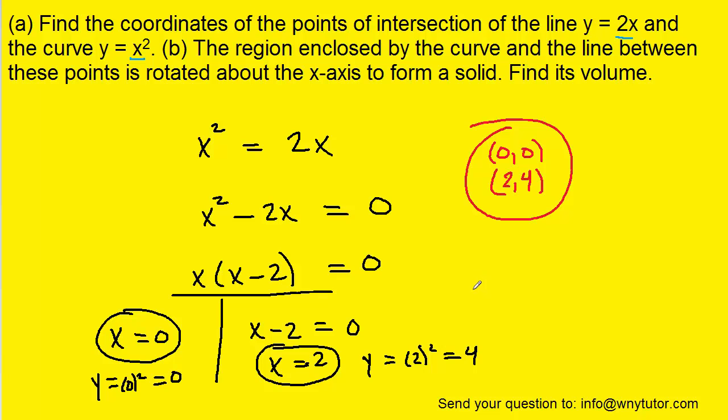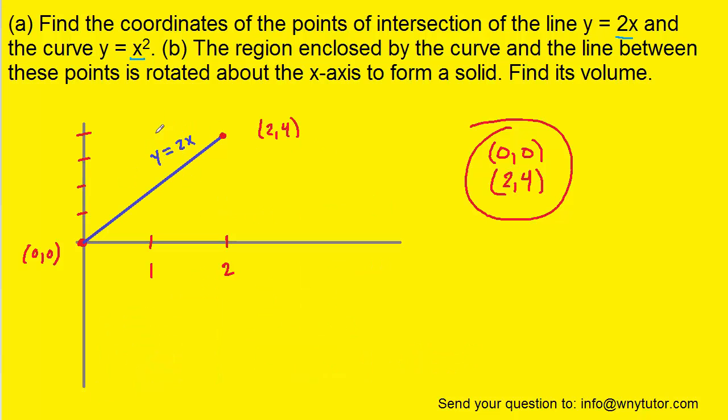For part B, we want to plot these two points as well as the equations that contain those points. The first equation is a straight line, y equals 2x, connecting the points from (0, 0) to (2, 4).